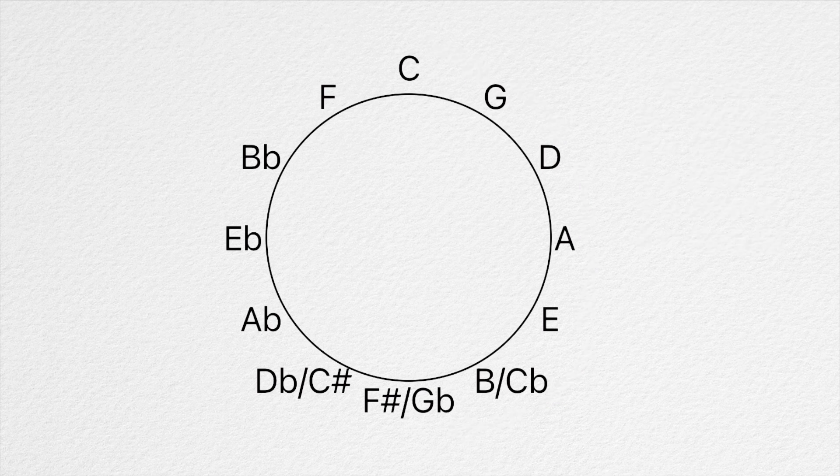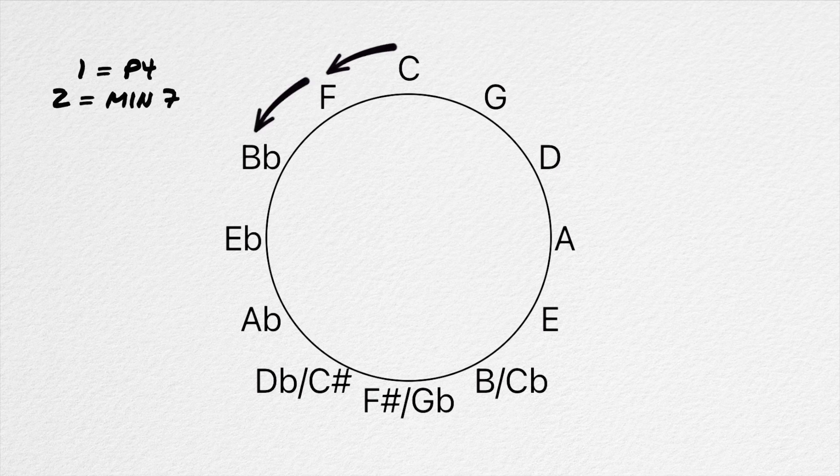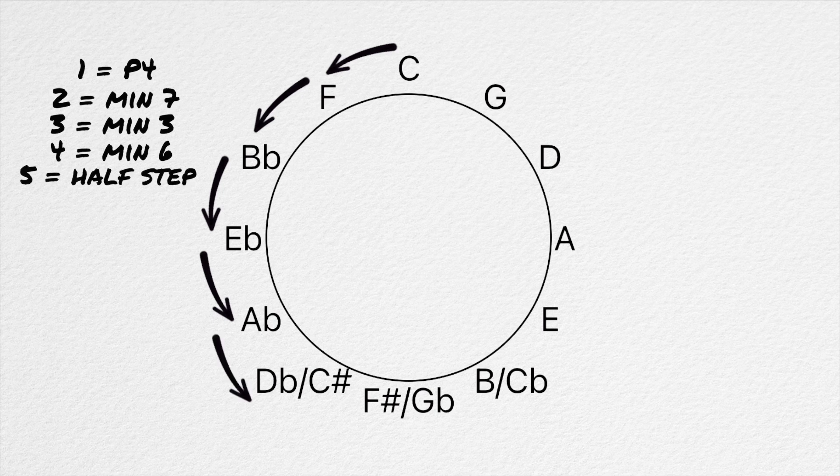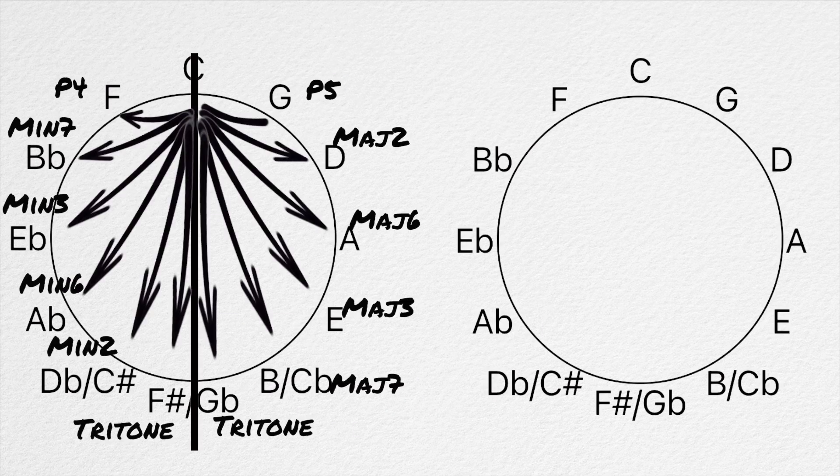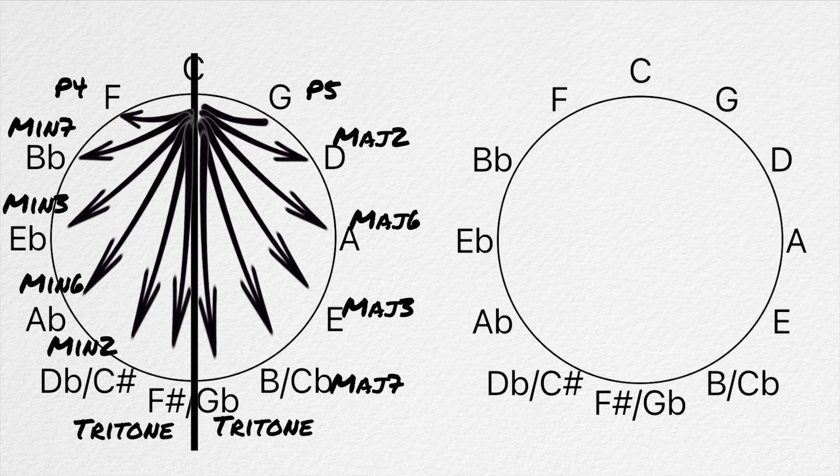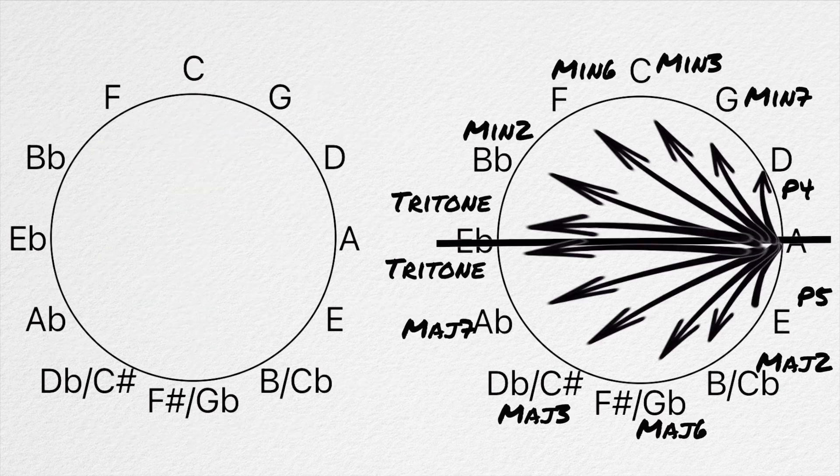Going counterclockwise will give you the inversions of all of these intervals. One step equals a perfect fourth. Two steps gives you a minor seventh. Three steps gives you a minor third. Four gives you a minor sixth. Five gives you a half step. And six gives you a tritone. Draw a line from any one note to the note on the exact opposite end of the circle and find every interval possible within an octave on either side of that pole.